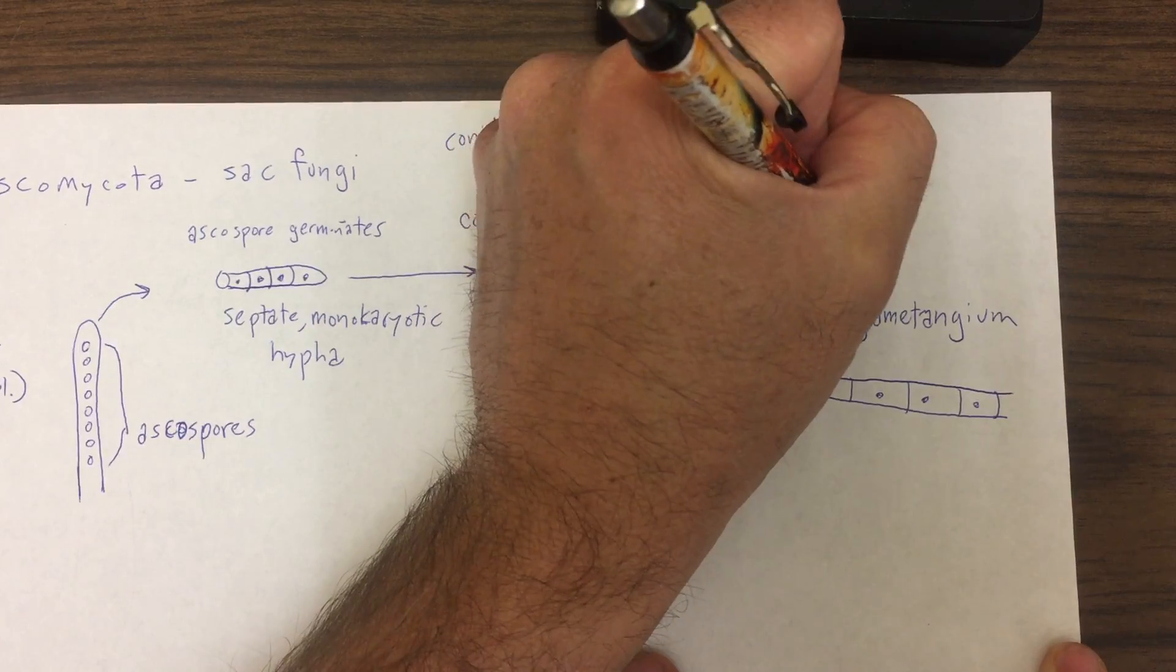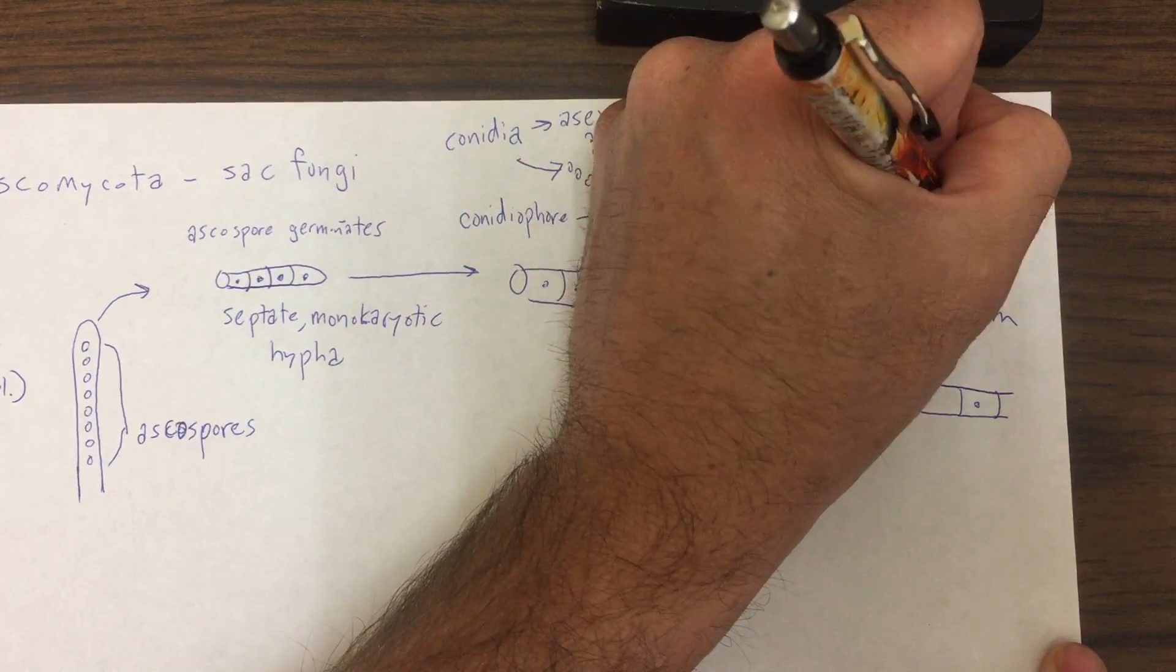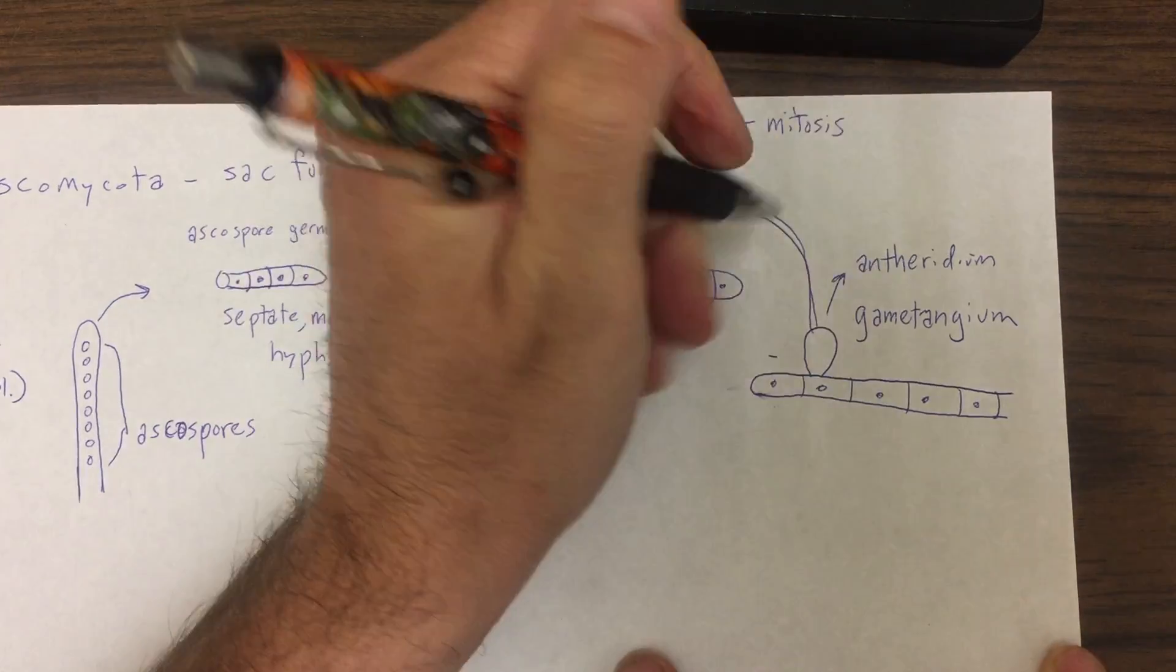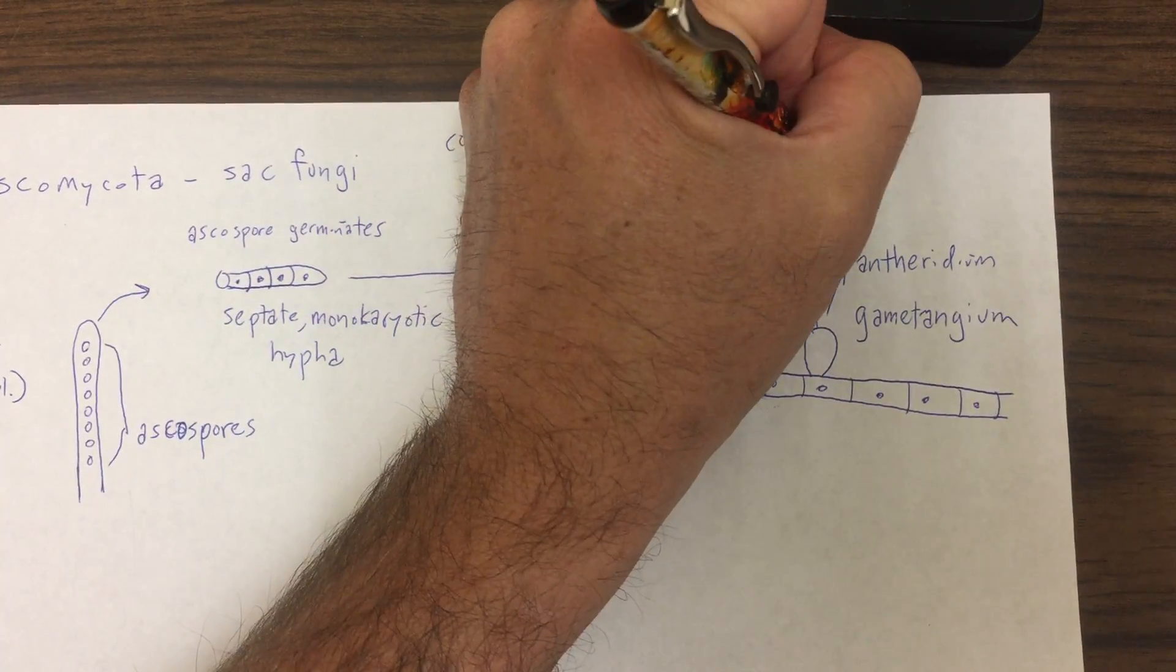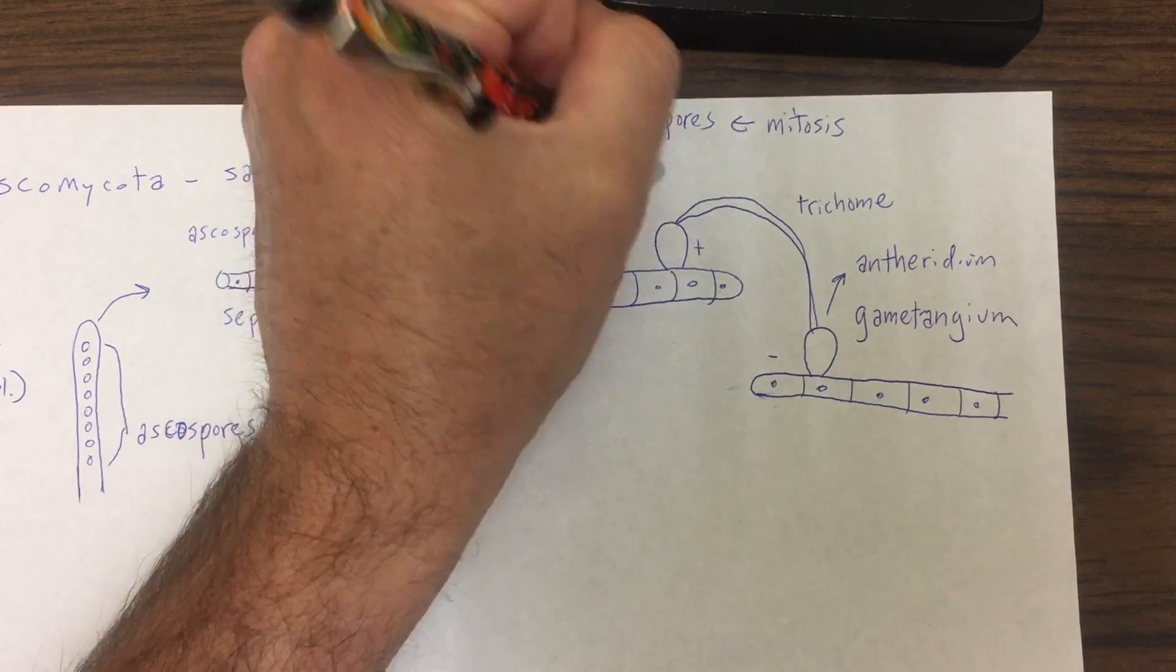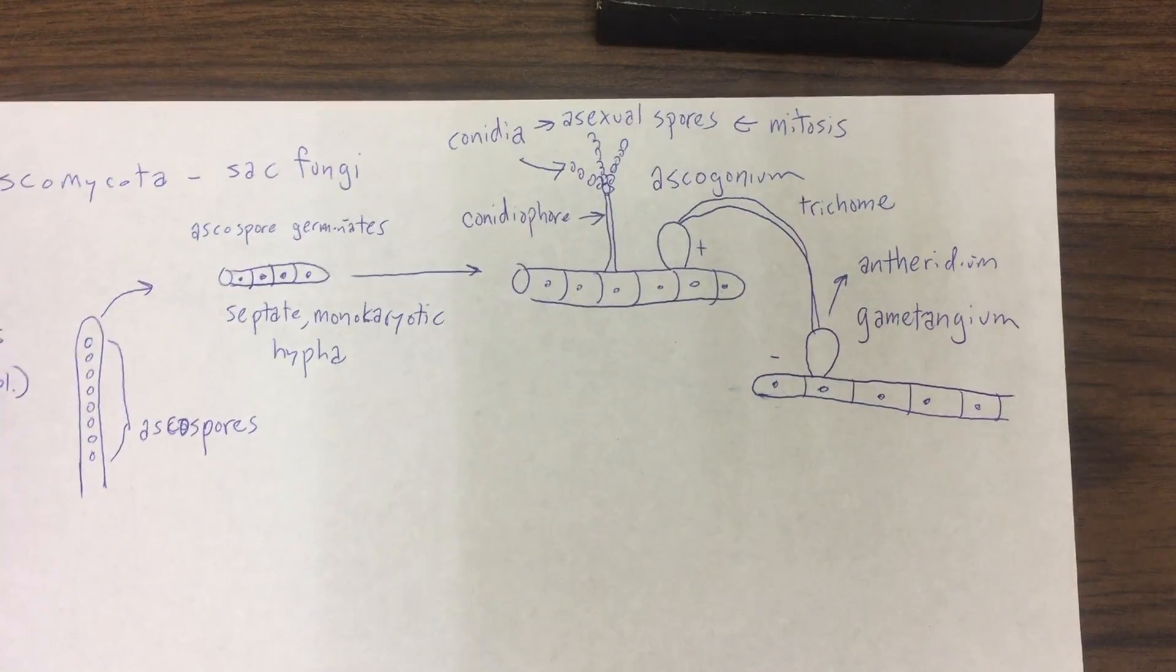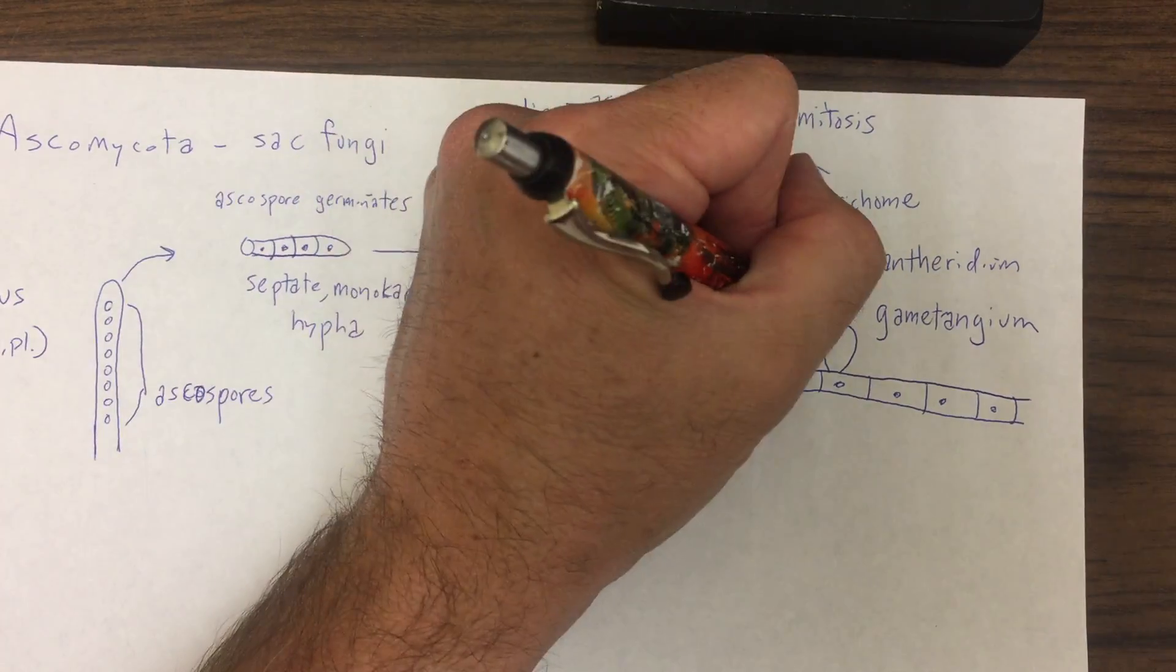There's one gametangium. Let's say this one is an antheridium, just like in plants. And we can produce this structure called a trichome to donate nuclei to this structure here, which is now called an ascogonium.